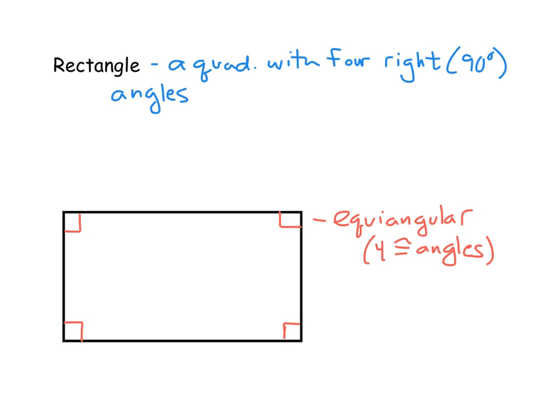Another thing to notice is that a rectangle is considered to be a type of parallelogram. It's more specific than just any old parallelogram, but it is still considered to be a type of parallelogram.